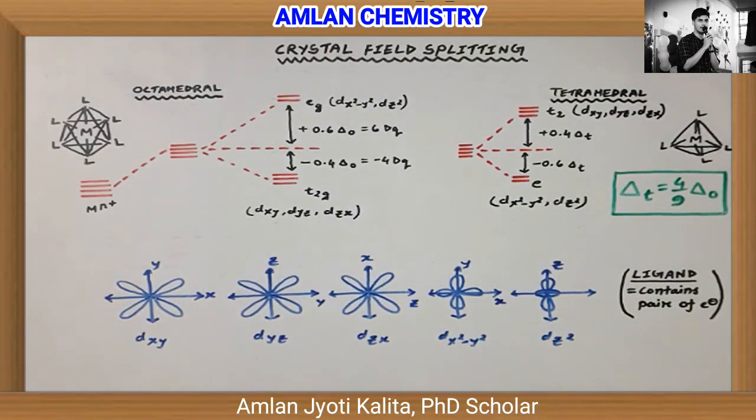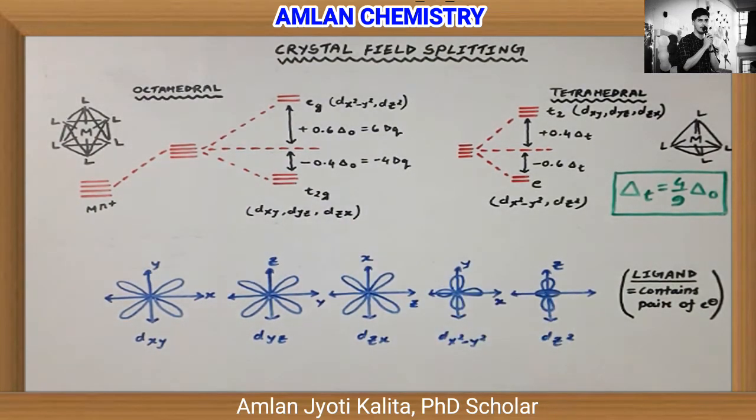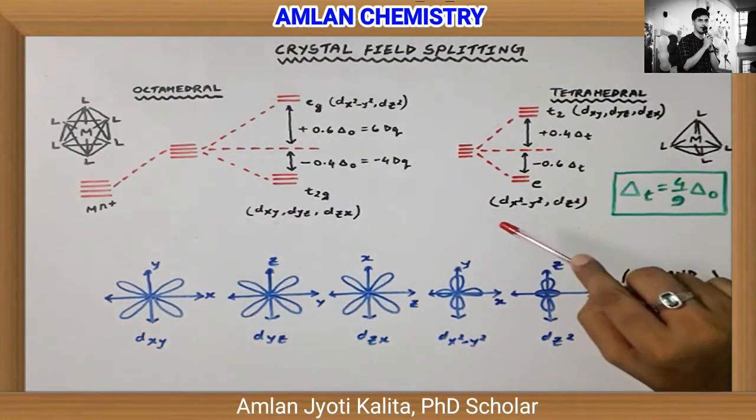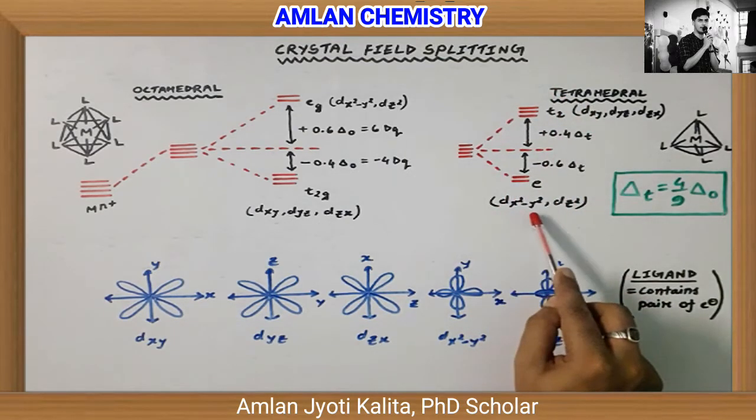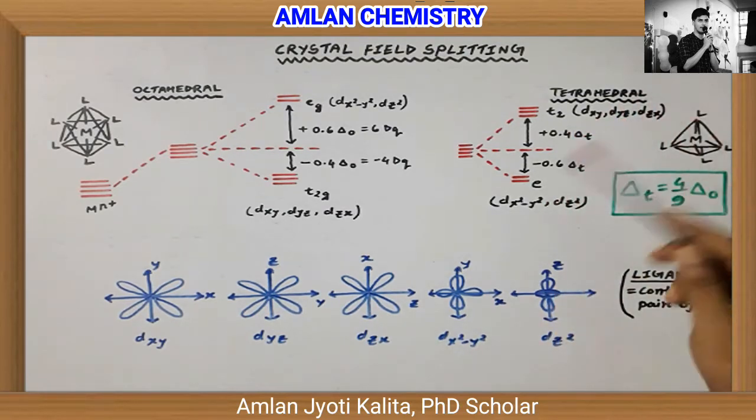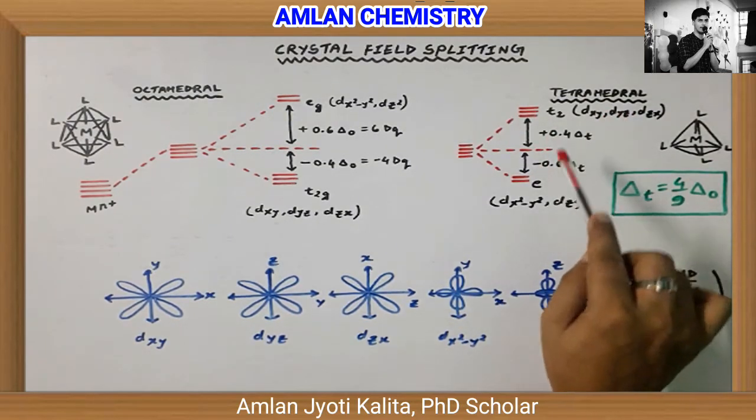For tetrahedral complexes, it's completely opposite because the ligands are not along the axis but between the axes. That's why EG and T2G are completely inverted. So E is now below T2. dx²-y² and dz² have lower energy, while dxy, dyz, and dzx have higher energy by ΔT, where T stands for tetrahedral.